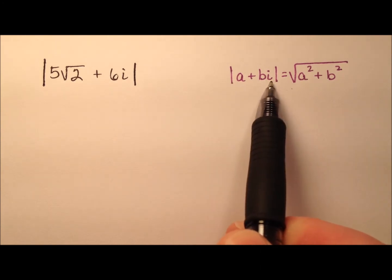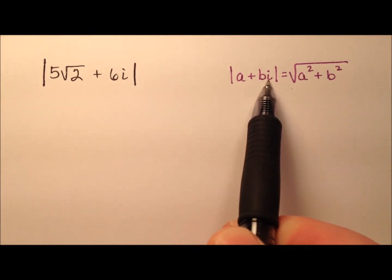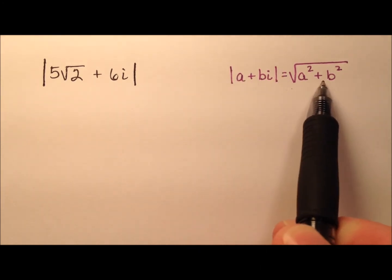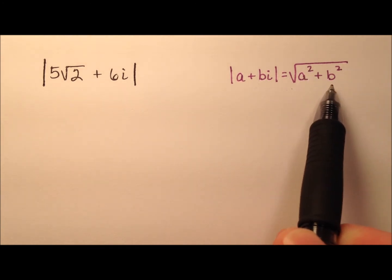So we know that for any complex number, a plus bi, we can find the absolute value by taking the square root of a squared plus b squared.